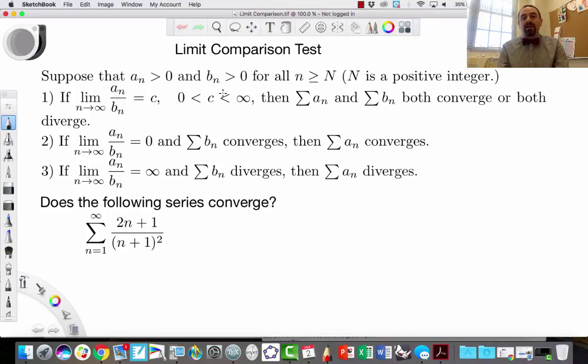So suppose we have two series, they're both positive, and for at least after some value of N. So that means that they could be negative for a while, but after a certain point they end up being positive. Then if we take the ratio of these sequences, the ratio of a sub n over b sub n, and the ratio is a constant, that means that they either both converge or they both diverge.